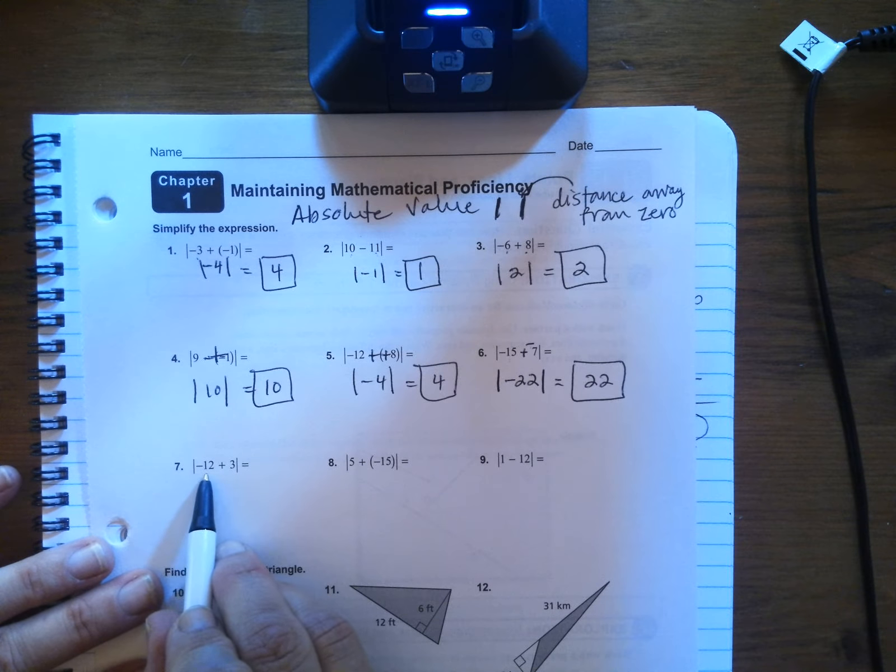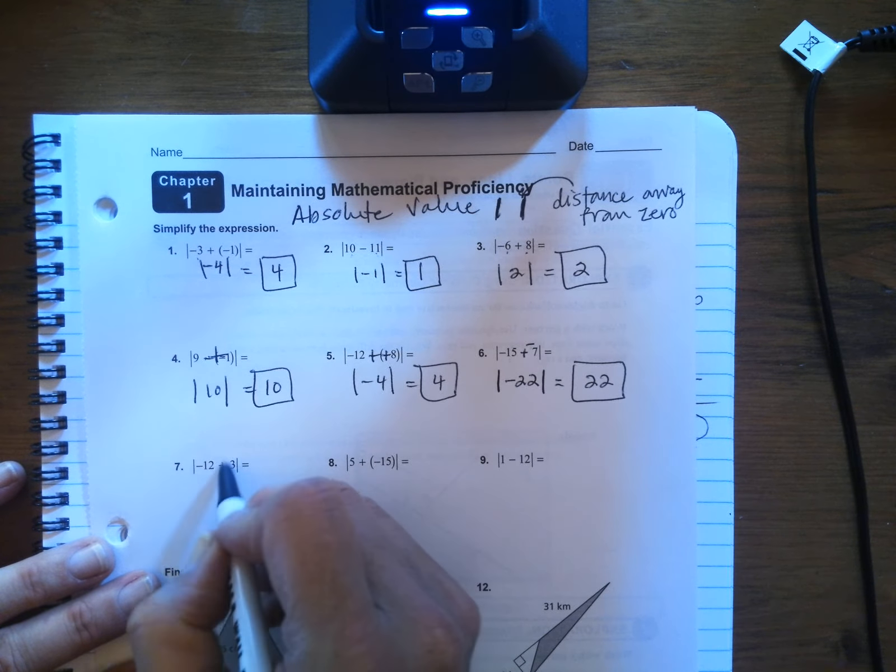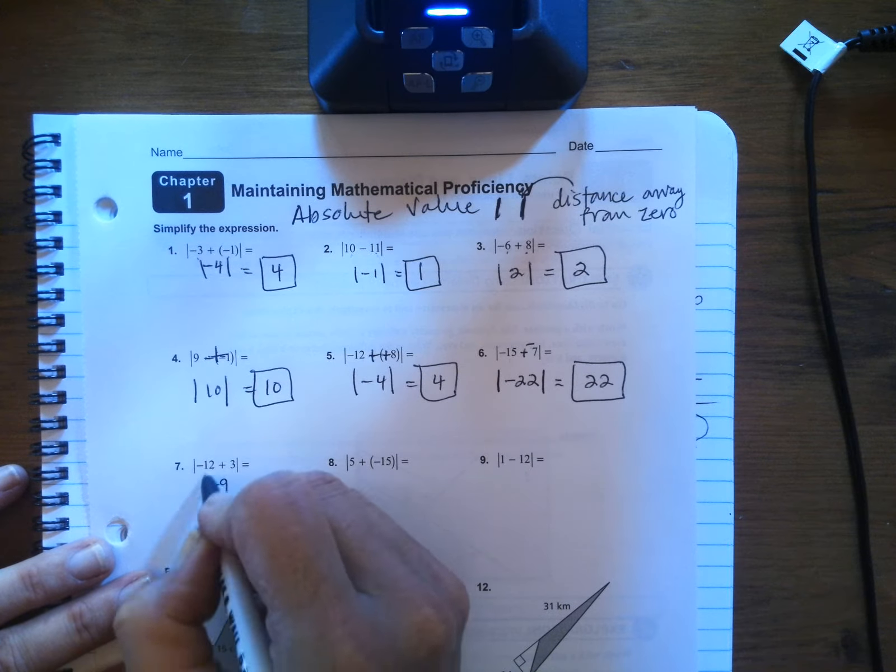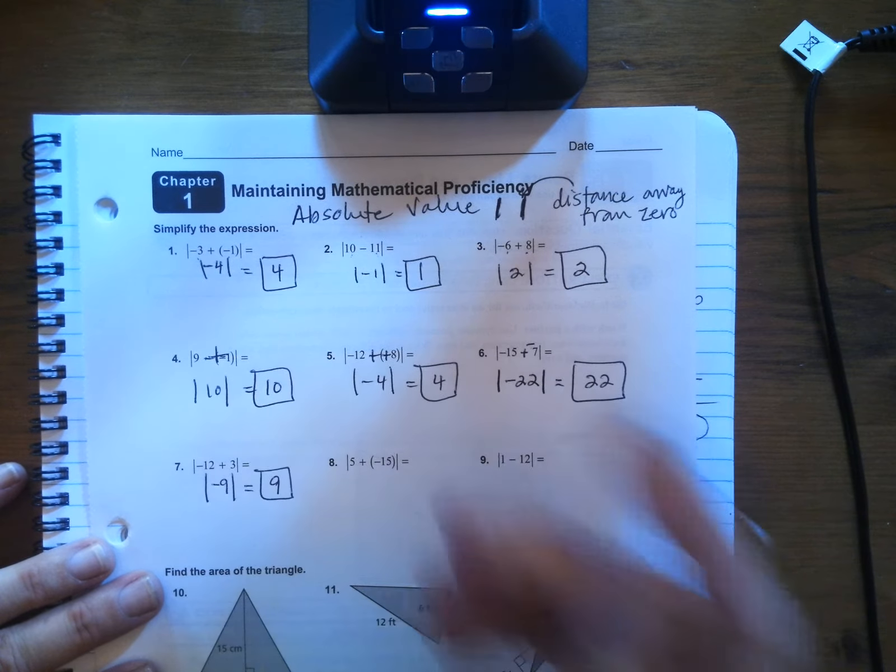Number seven, negative 12 plus three is 12 negatives, three positives. So I get a total of nine negatives, and that absolute value is nine.